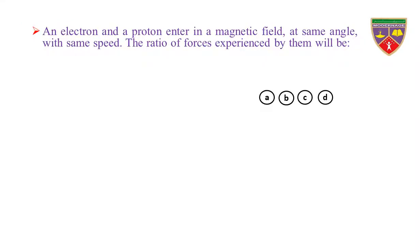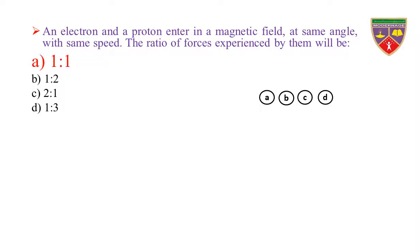An electron and a proton enter a magnetic field at the same angle with the same speed. The ratio of forces experienced by them will be: Option A, 1 to 1. Option B, 1 to 2. Option C, 2 to 1. Option D, 1 to 3. The key is 1 to 1. Therefore, the correct option is A.